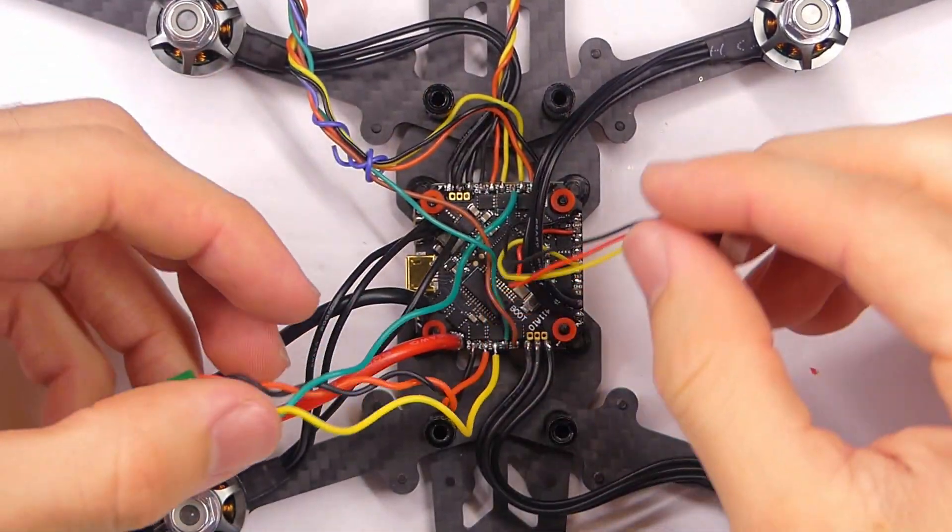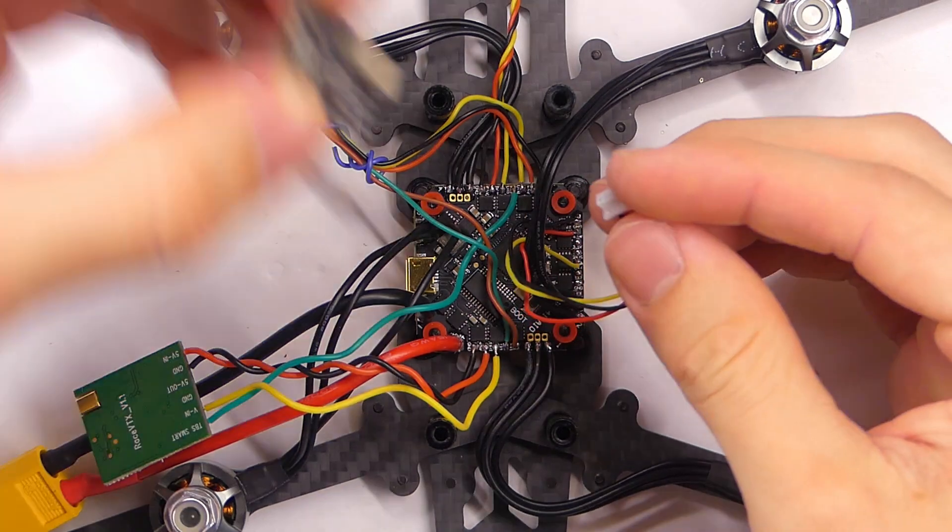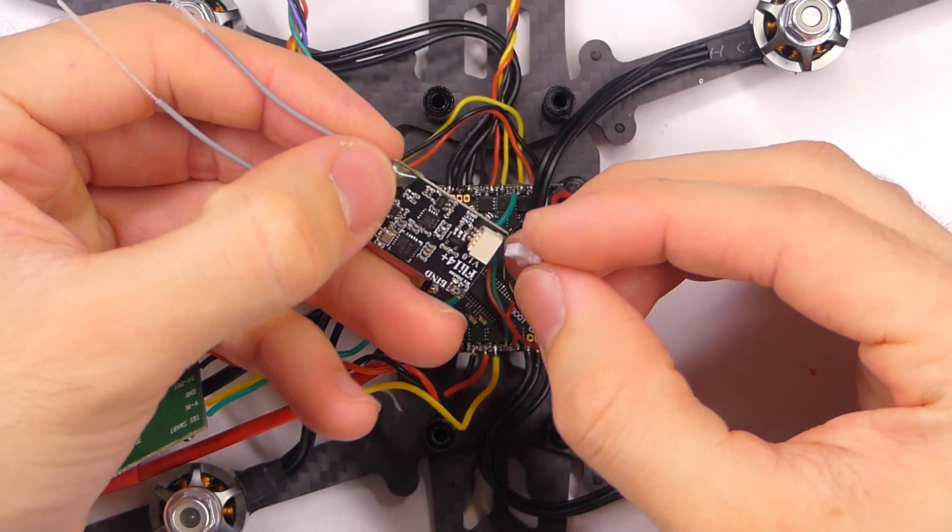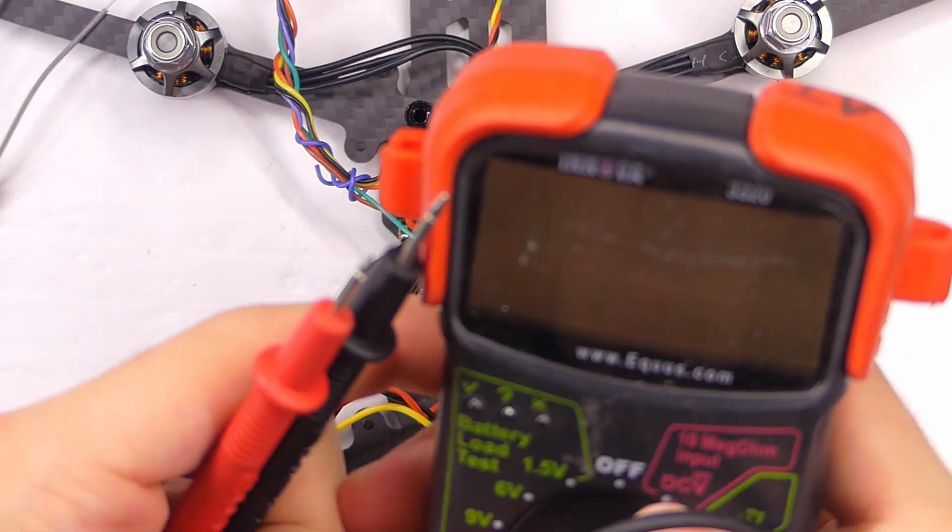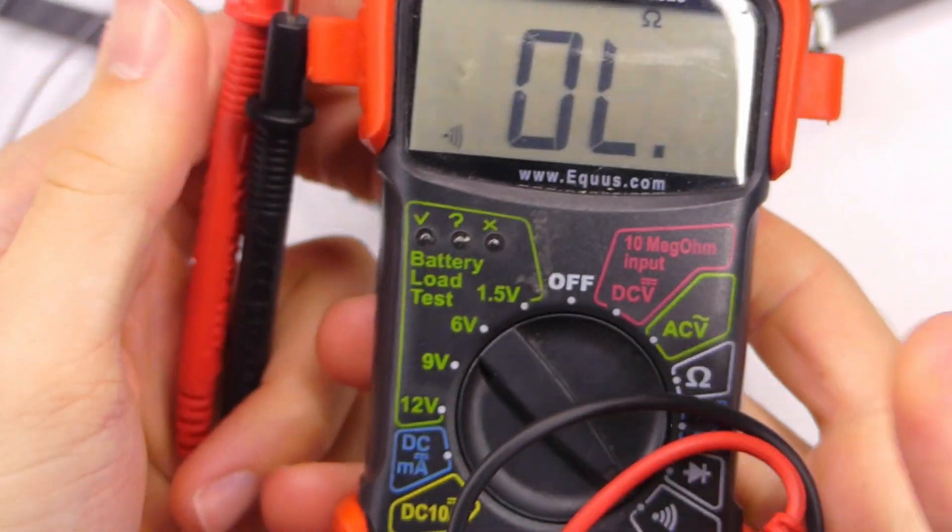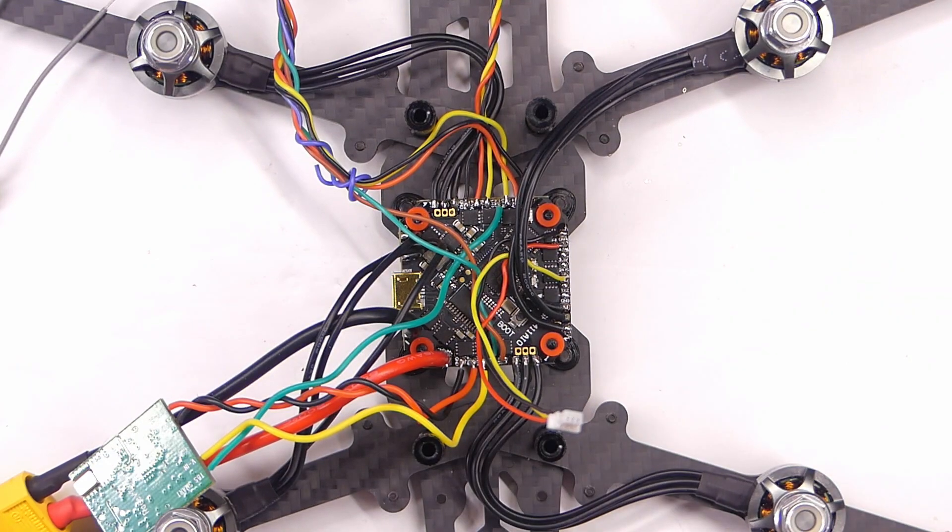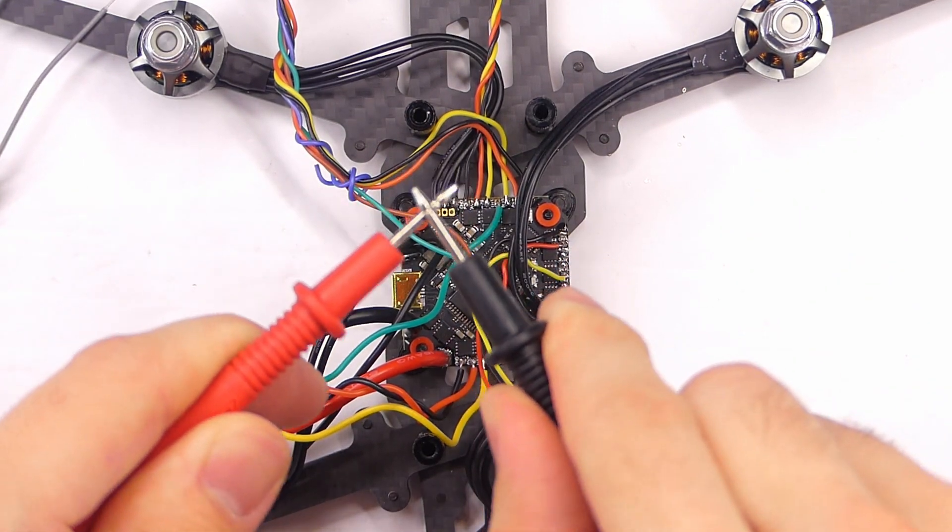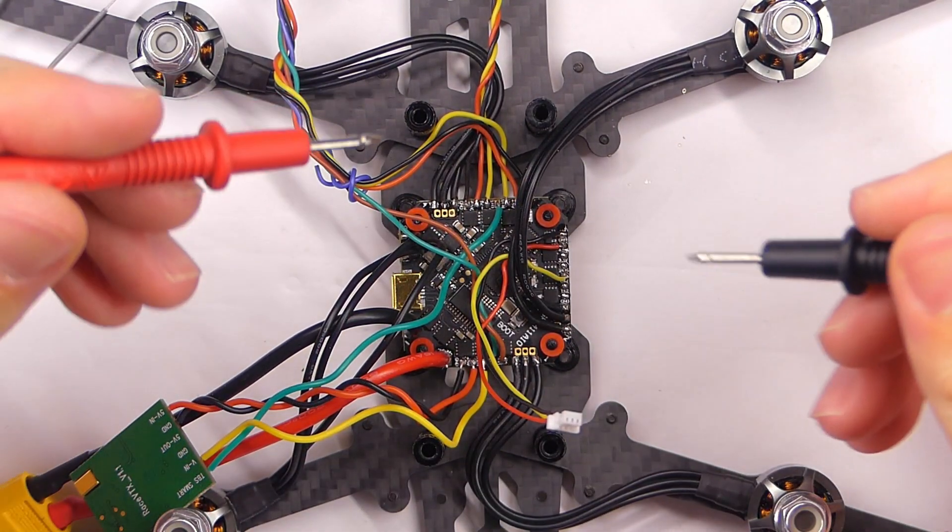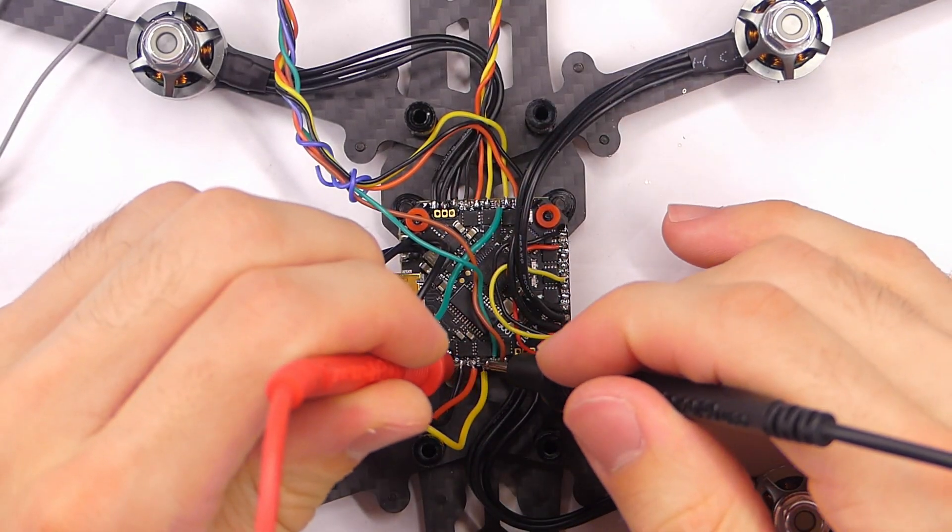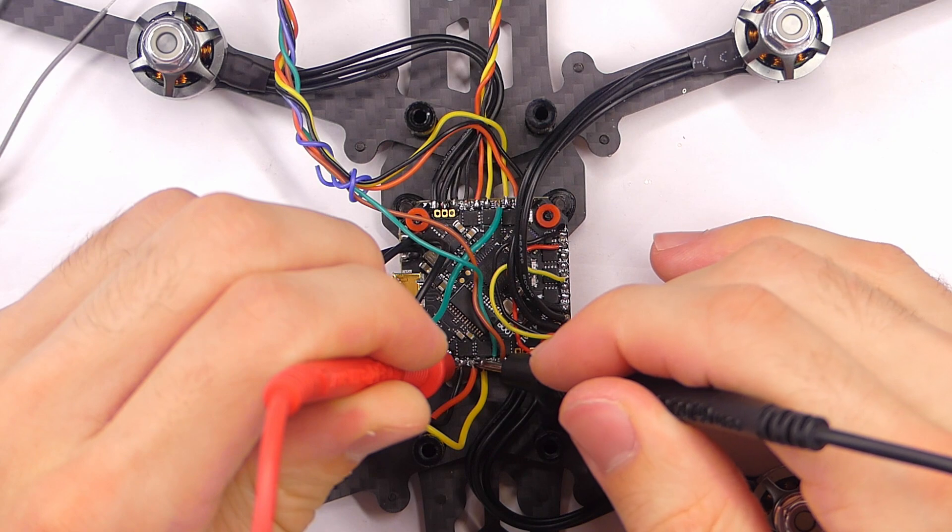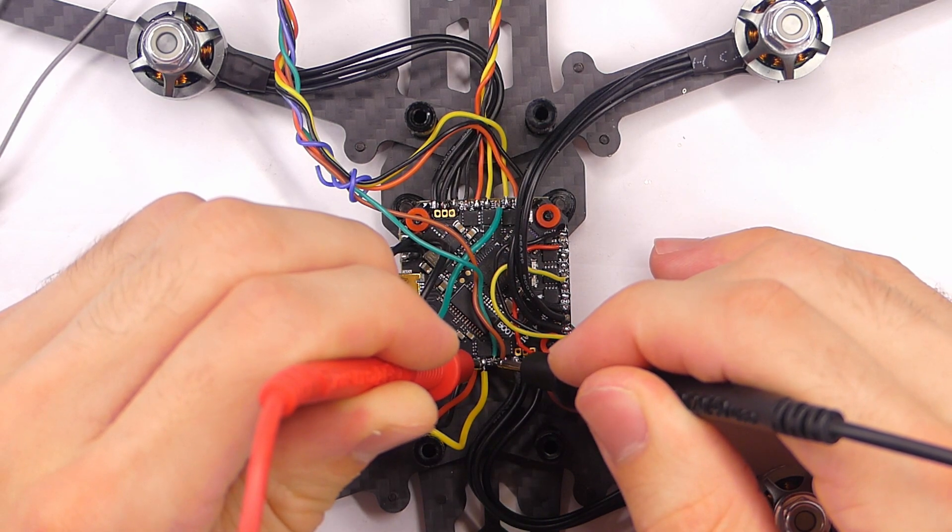We have our video transmitter, we have our receiver. So we can go ahead and connect all these guys. Before we tidy everything up here, I'm going to get my multimeter and put it to the continuity test function. So when I put these two probes together, it will beep. So I'm going to check all of my solder connections here and make sure they are not connecting to each other.